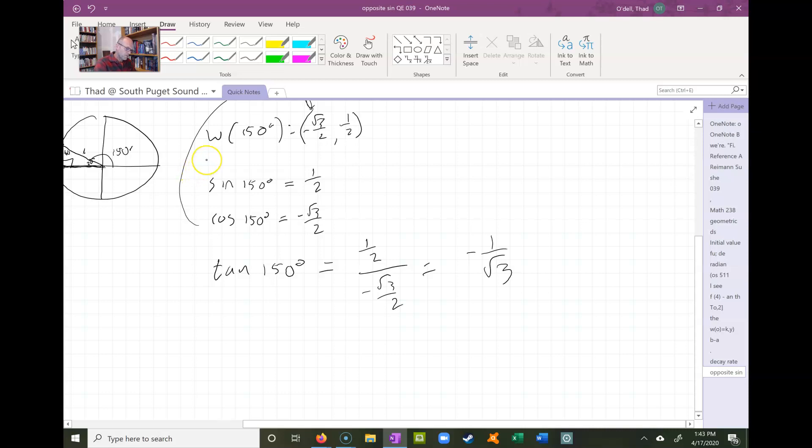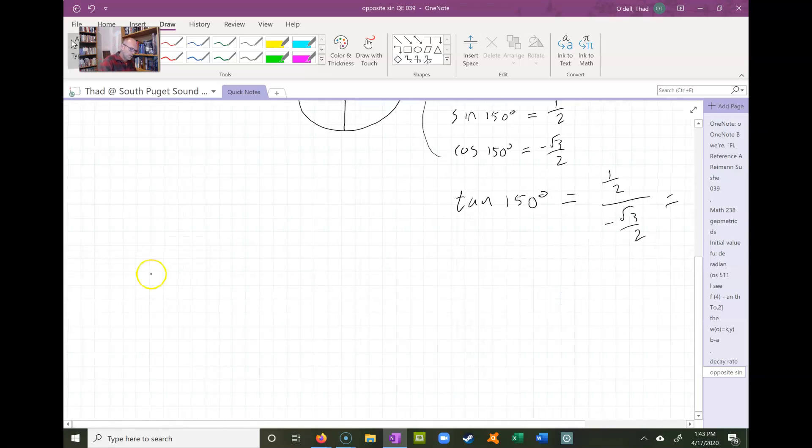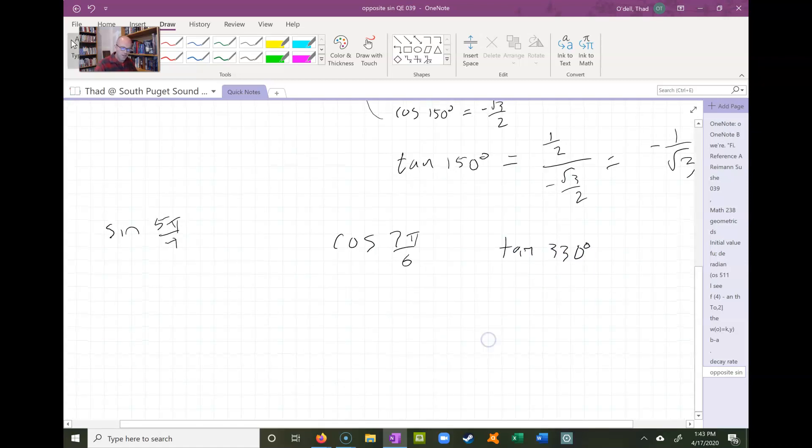So really what you want to do now is just start practicing this thing. You should be able to, if I ask you what sine of 5π/4 is, or cosine of 7π/6, or tangent of 330 degrees, without a calculator or any kind of a pre-drawn unit circle, you should be able to evaluate those.